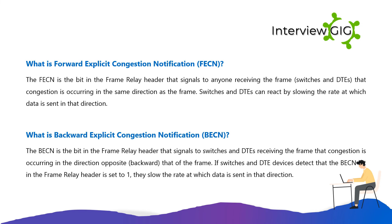What is Forward Explicit Congestion Notification (FECN)? FECN is a bit in the frame relay header that signals to switches and DTEs receiving the frame that congestion is occurring in the same direction as the frame. Switches and DTEs can react by slowing the rate at which data is sent in that direction.